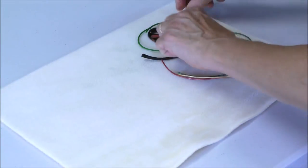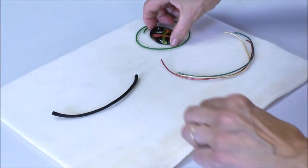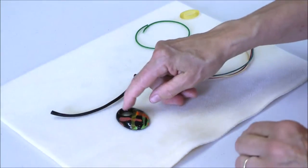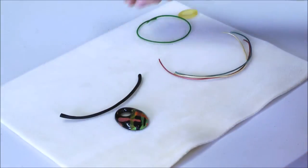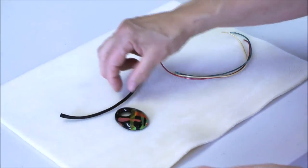I can also use a lark's head knot to make a bail. I have here a kazoori pendant where the loop is really too big to use a jump ring, so the question is how would I hang it from this piece of leather.